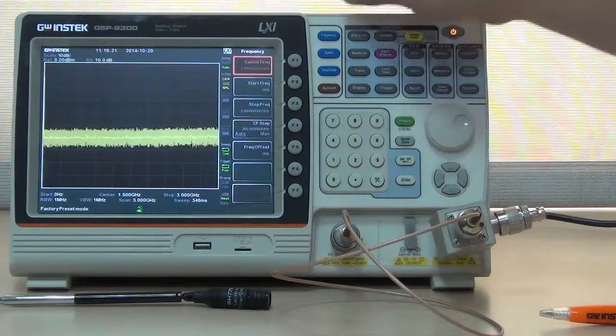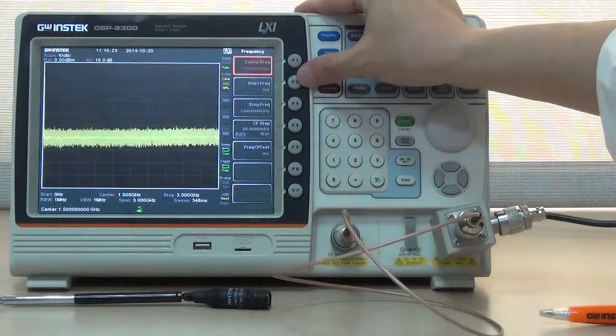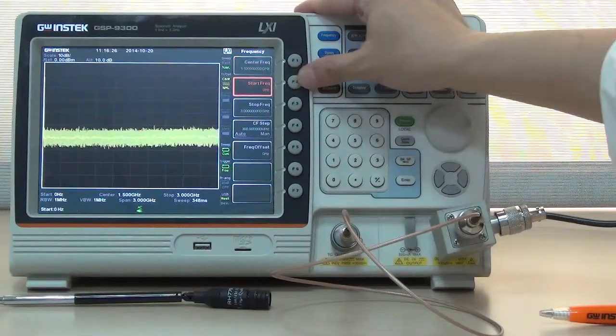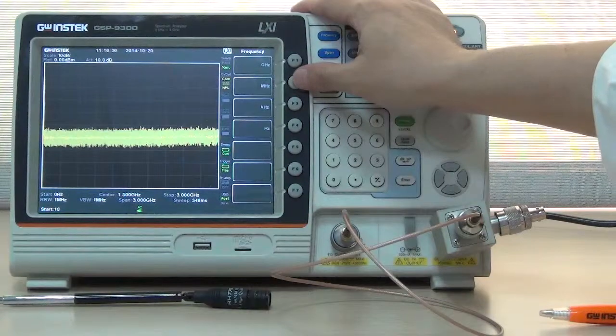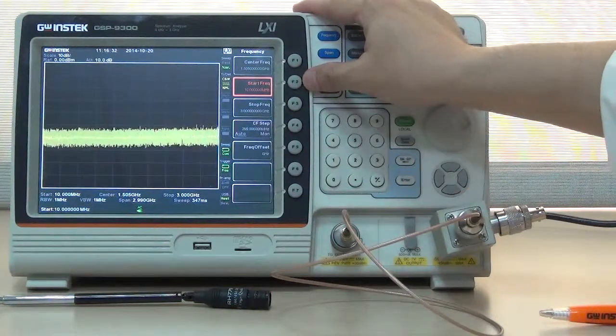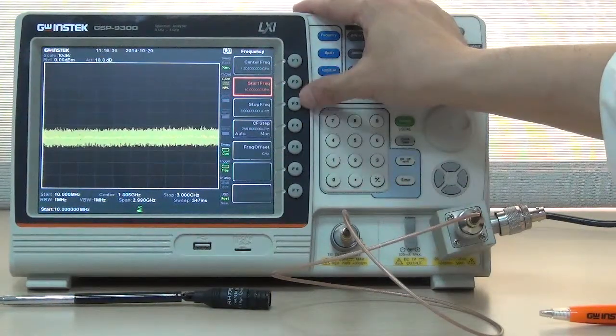To begin the operation, press Frequency and select F2 Start Frequency, input 10 MHz to set start frequency as 10 MHz.